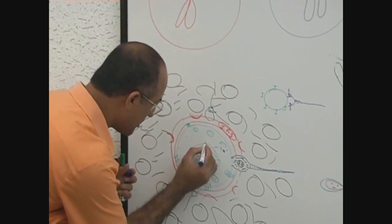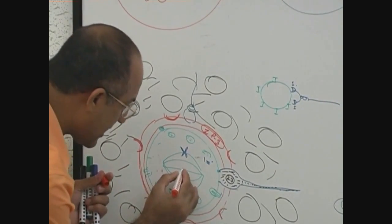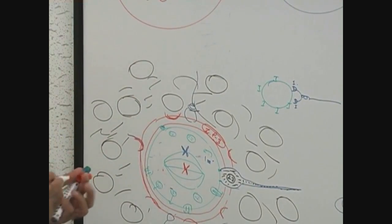For example, this was which one? Paternal chromosome number 1 and what is this? Maternal chromosome number 1. Now what will happen?